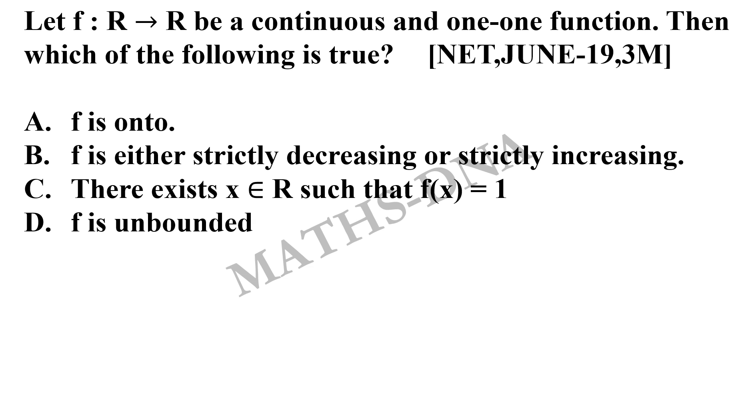Firstly, for option A it says that f is onto. In the question it is given to us that f is one-one and continuous, so let us take an example of a function which is one-one as well as continuous.